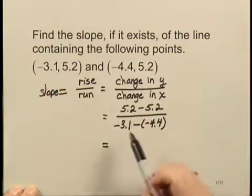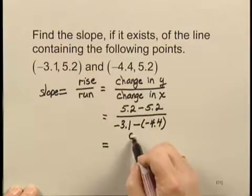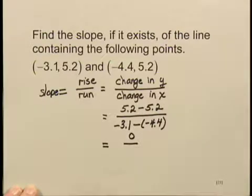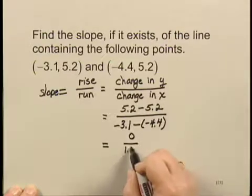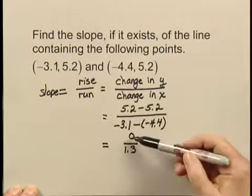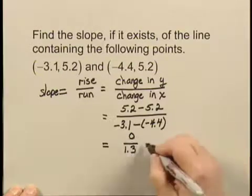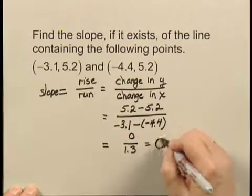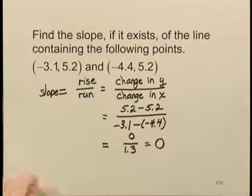Now, in the numerator, I have 0, and in the denominator, I have 1.3. Now, 0 divided by a number is 0. So the slope of this line is 0.